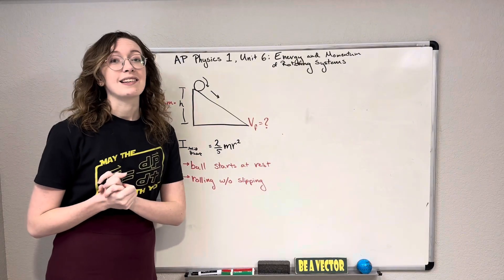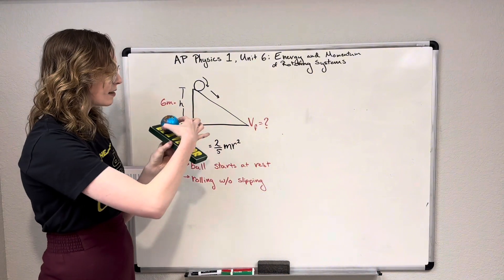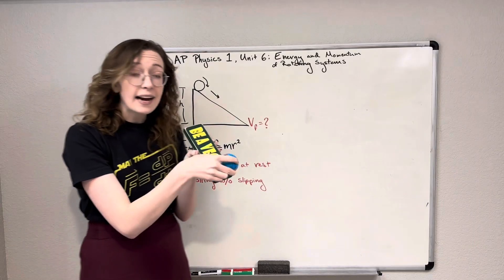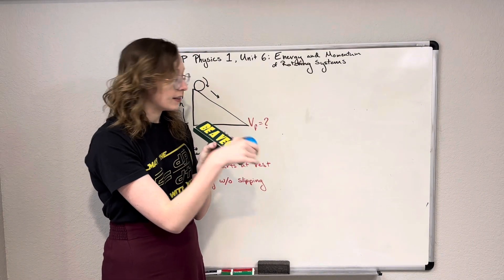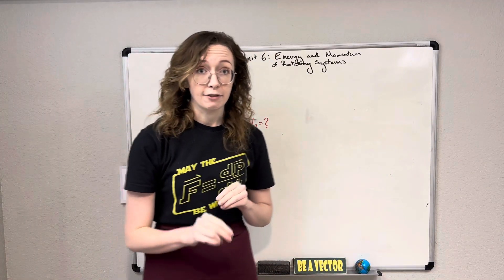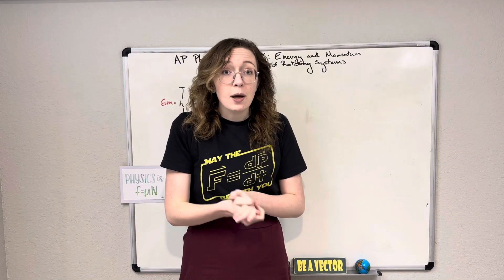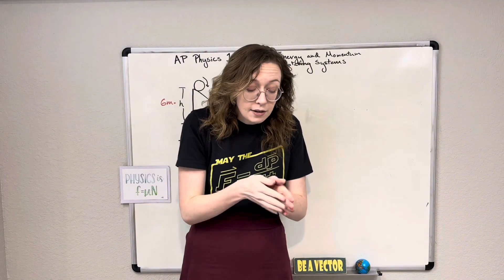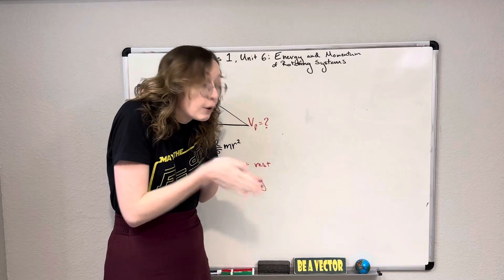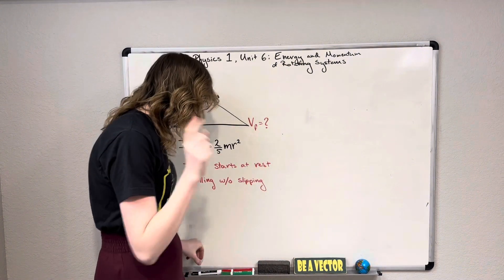We're also told our ball is rolling without slipping — that's a very useful piece of information. Rolling without slipping means the ball rolls down the ramp with no skidding or sliding. This means there's no kinetic friction, so we don't have to worry about losing energy to friction via heat as the ball goes down the ramp.